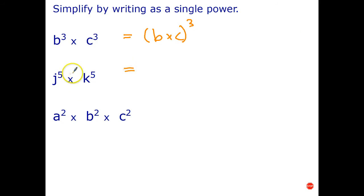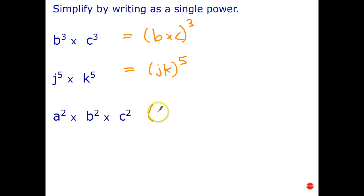Let's see how you went. j to the 5th times k to the 5th could be written as jk all to the power of 5. And again, the index law applies to as many factors as you wish. Since a squared, b squared, and c squared are all to the power of 2, that's abc all to the power of 2. So that's index law number 4, and in the next video we're going to do index law number 5.